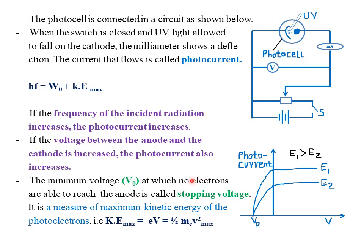The minimum voltage V₀ at which no electrons are able to reach the anode is called the stopping voltage. If the voltage is too small, the anode cannot attract any electron from the cathode, so no current flows and the milliammeter records zero. At the stopping voltage V₀, the corresponding value of current will be zero, as shown in this particular graph.